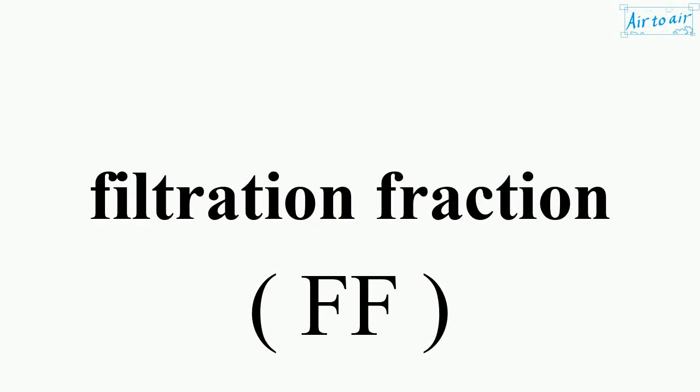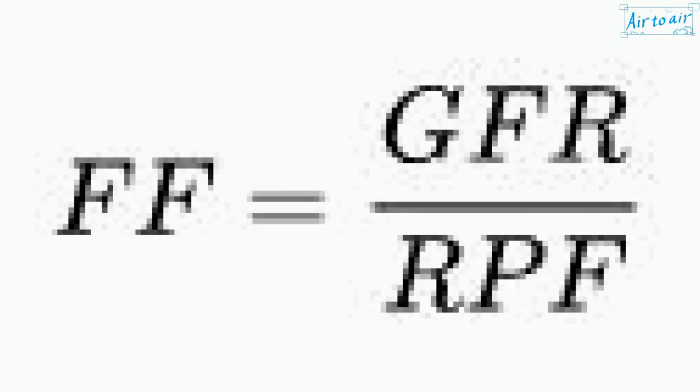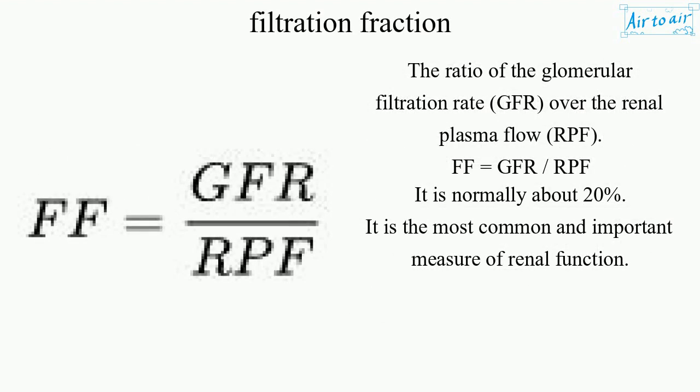Filtration Fraction. The ratio of the glomerular filtration rate, GFR, over the renal plasma flow, RPF. FF equals GFR over RPF. It is normally about 20%. It is the most common and important measure of renal function.